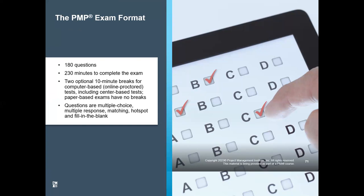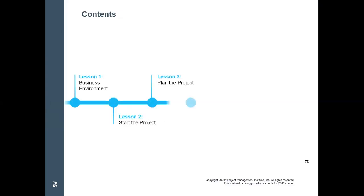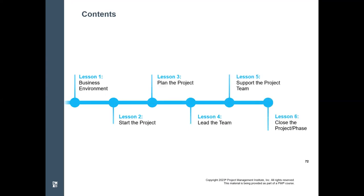The PMP exam blueprint is 180 questions, four hours, with two scheduled 10-minute breaks — you can break it up into 60-60-60 questions. Question types include multiple choice, multiple responses where you choose two options, matching sets where you drag one column option to another column, hotspot where you pin a point on a graphical coordinate, and fill-in-the-blank — all in a computer-based automated process.